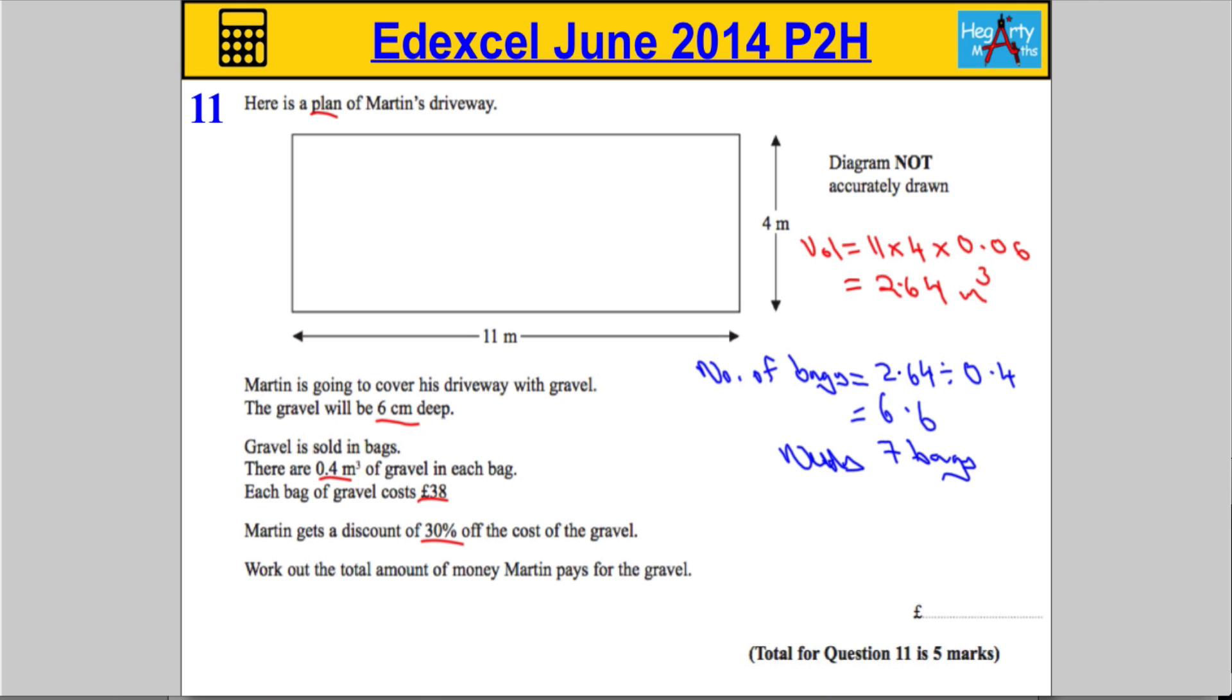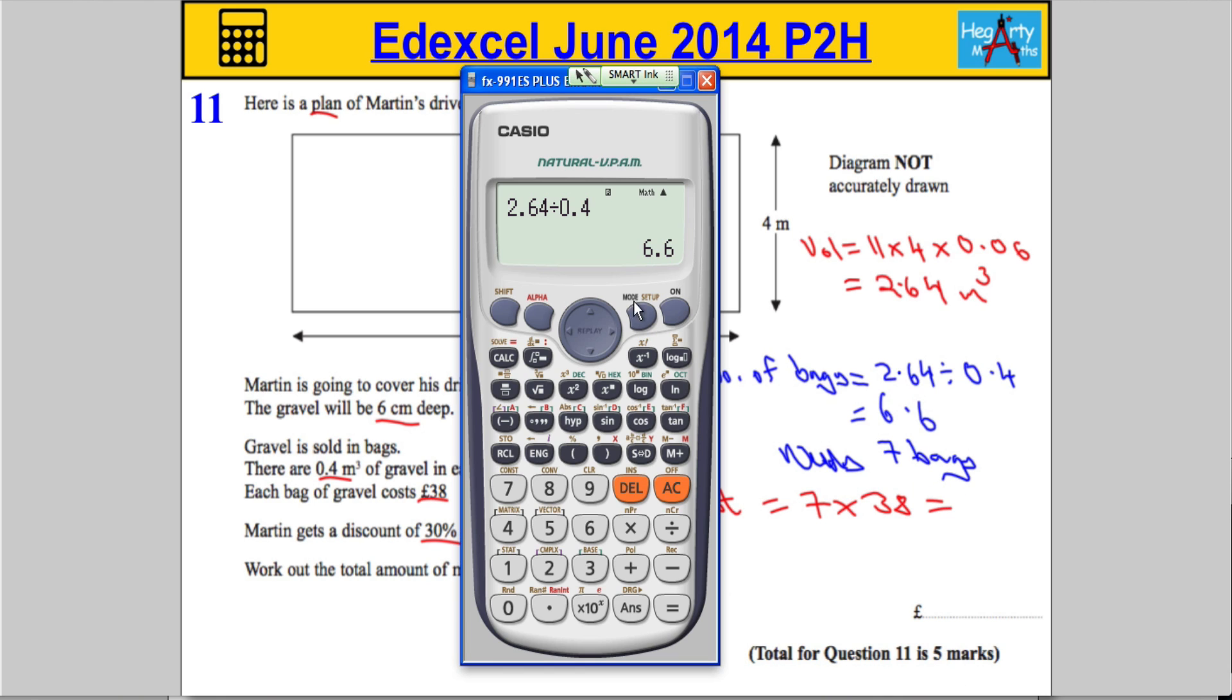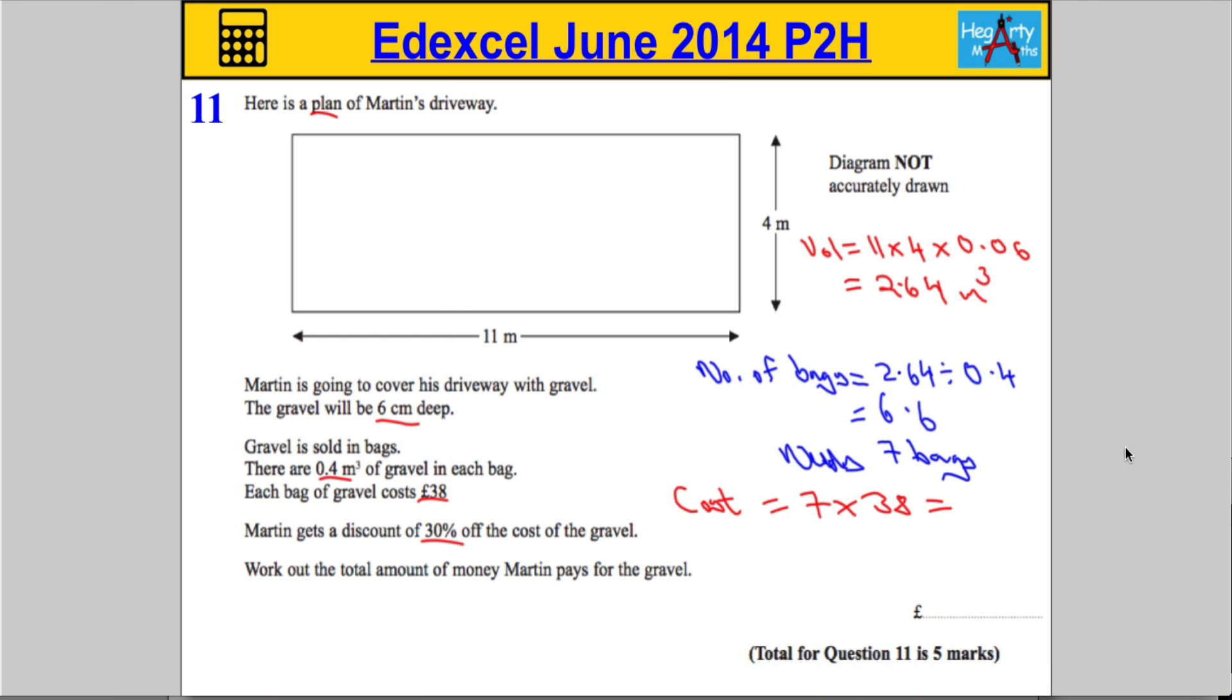He needs 7 bags. Now each bag costs 38 pounds, so let's work out the total cost before the discount. The cost is going to be 7 lots of 38 pounds. 7 lots of 38, again, let's get the calculator to do this just so that we don't make any silly mistakes. 38 times by 7 gives us 266 pounds.